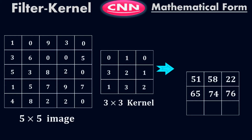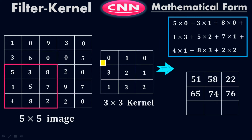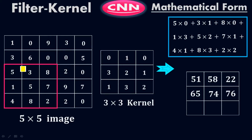The seventh value: 5×0 + 3×1 + 8×0 + 1×3 + 5×2 + 7×1 + 4×1 + 8×3 + 2×2. When you do the simplification, you will get 55. Then pick the next three by three matrix: 3×0 + 8×1 + 2×0 + 5×3 + 7×2 + 9×1 + 8×1 + 2×3 + 2×2. The eighth value equals 64.